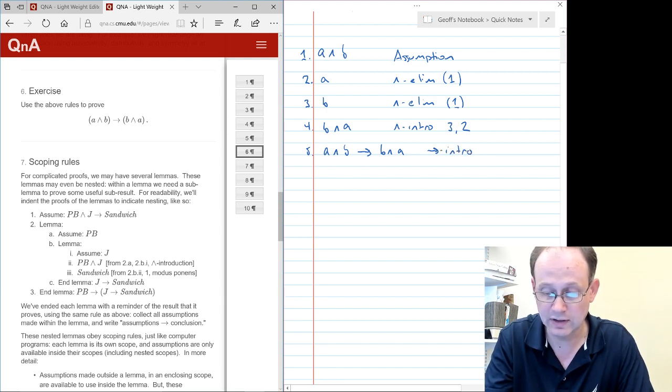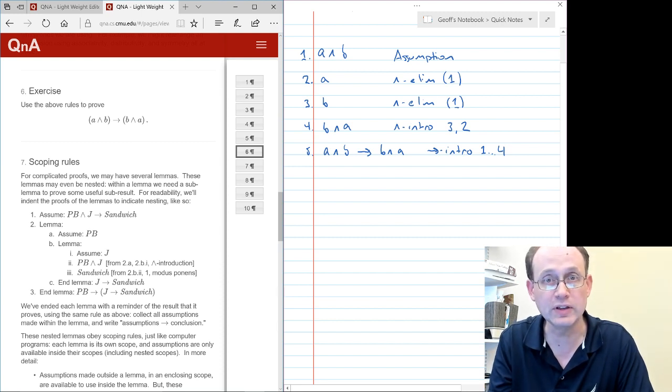And the scope of that is from lines one to four. All right. The scope is from the first point that we introduced one of our assumptions to the last point where we proved something that's one of our conclusions.